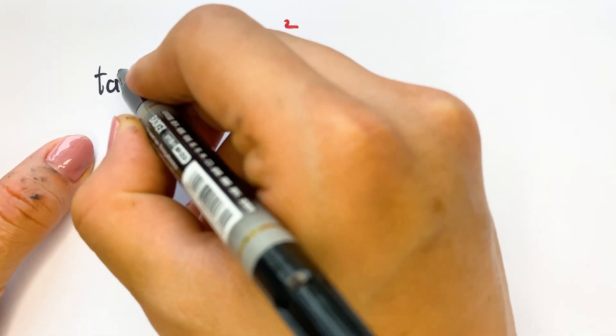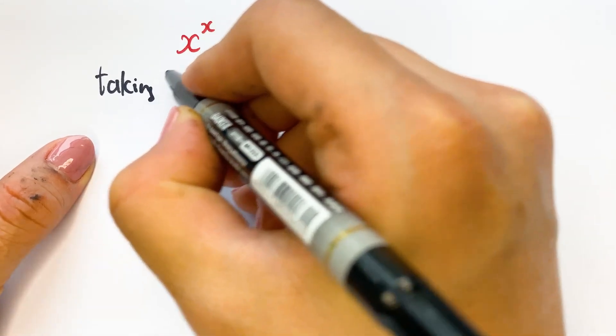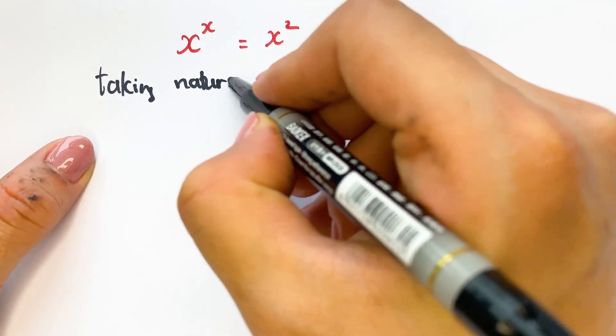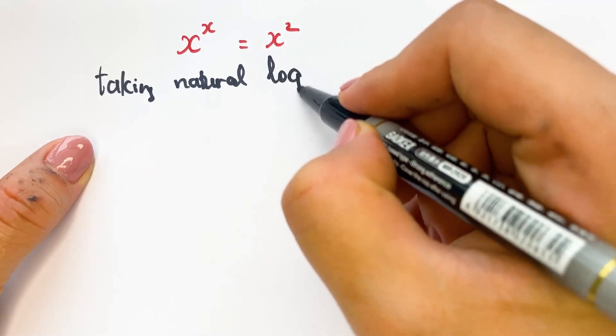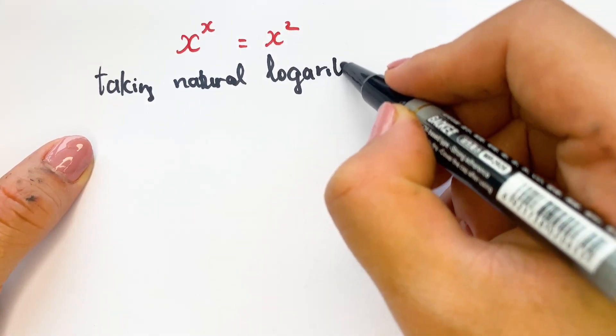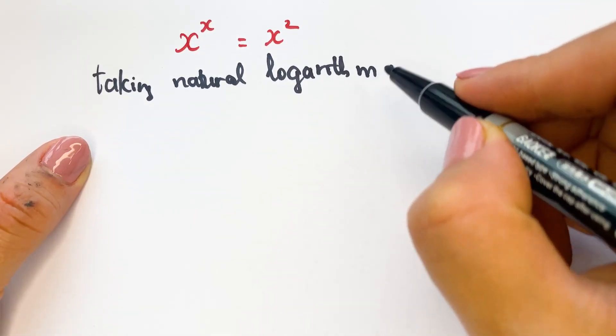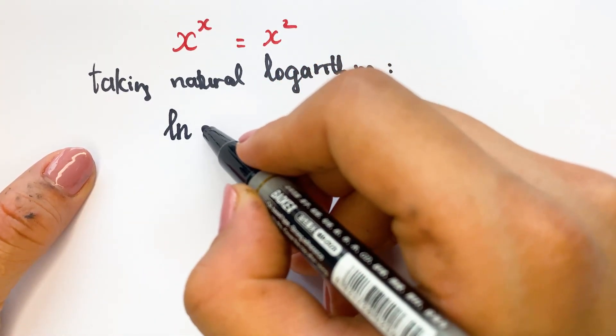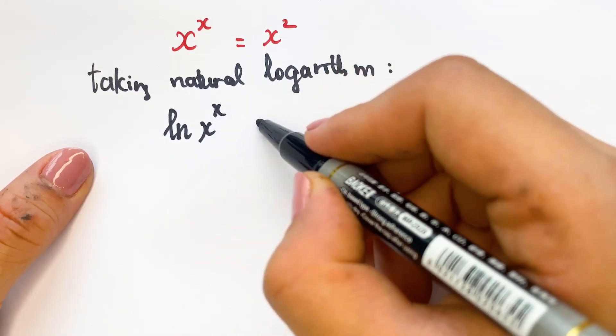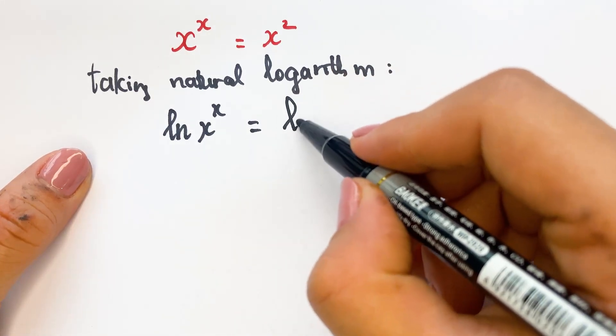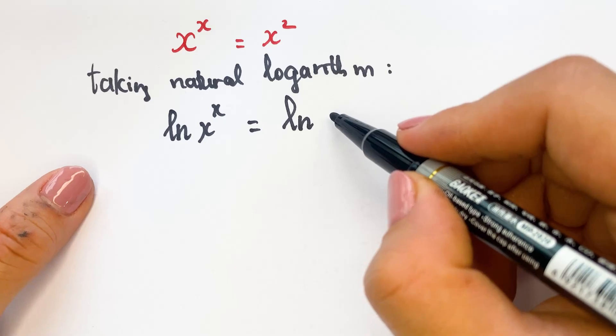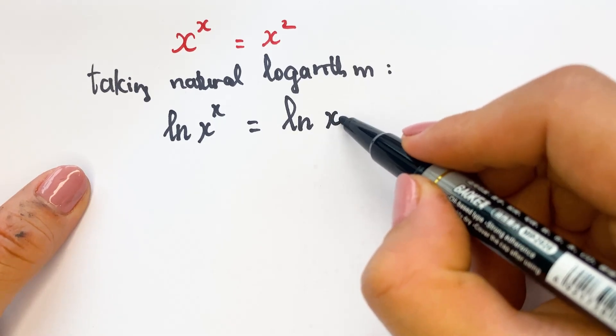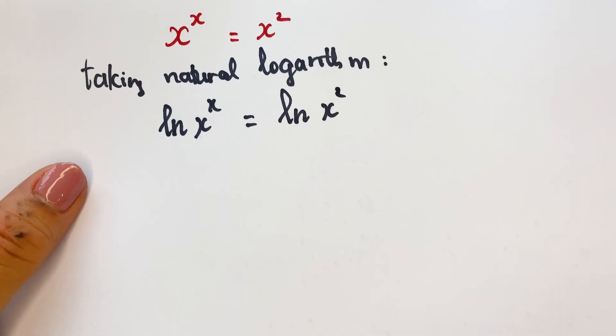Taking natural logarithm, you can have natural logarithm of x^x equals natural logarithm of x^2.